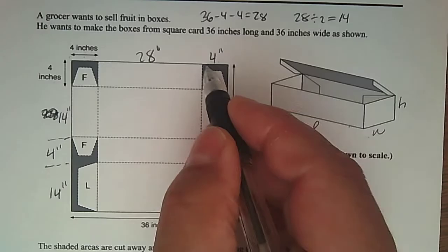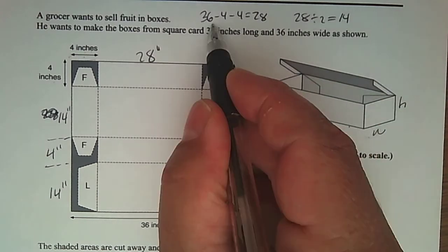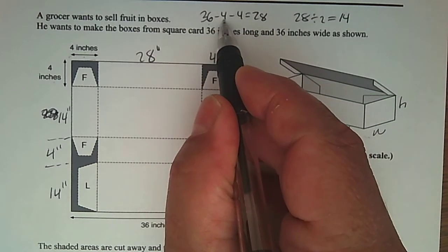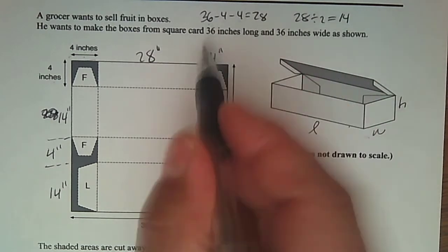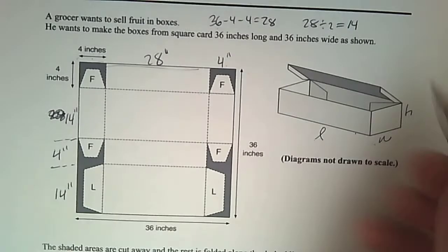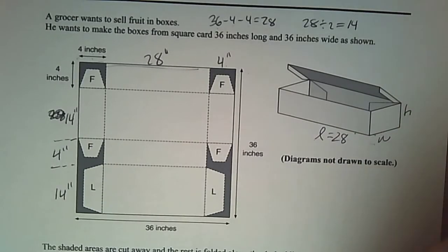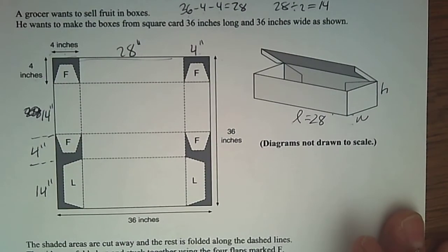I know the whole thing is 36 going down. So if this is four, that means the other side is four. The whole length is 36. So I want 36 take away four, take away the other four. What does that leave you with? 28 inches. Now what does this side represent when I look over here?